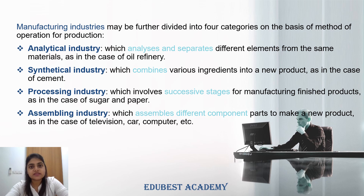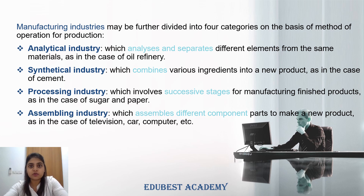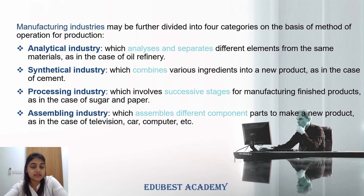The third one is processing industry. In processing industry, as the name suggests, there are successive stages which need to be followed to gain the end result or to manufacture the finished good. We have to go step 1, step 2, step 3 — we cannot jump directly from step 1 to step 3, otherwise the production will not be proper. For example, sugar or paper mills have a decided process — what they must do first, then second, then third. When stages are followed accordingly, that is called a processing industry.